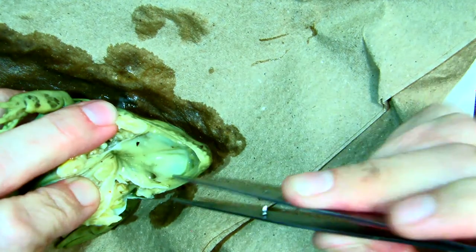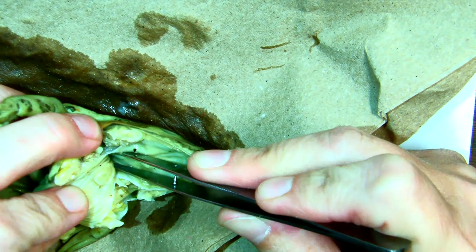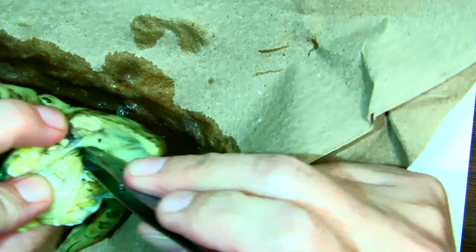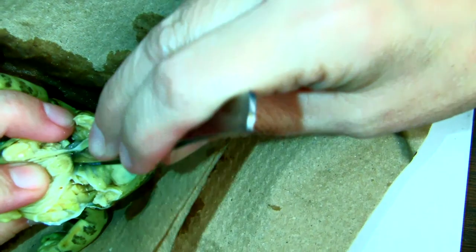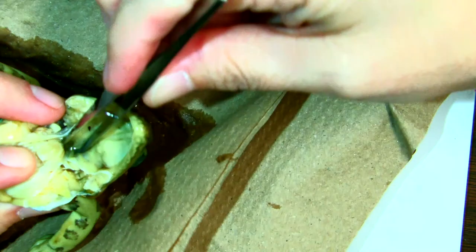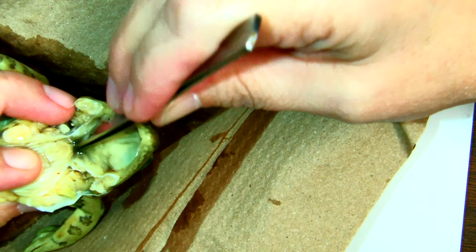Then we have the gullet. So once he does swallow his prey, it goes down the gullet, and this leads to his stomach. That's the gullet, which would be our esophagus.